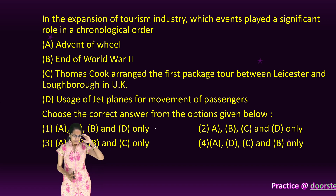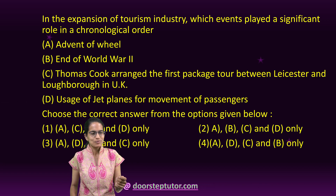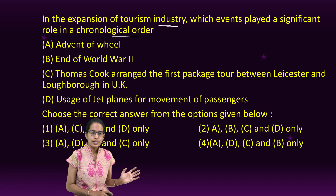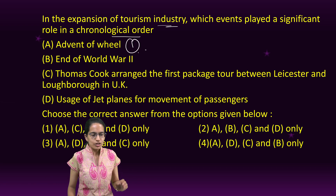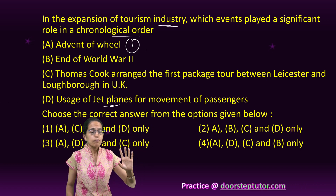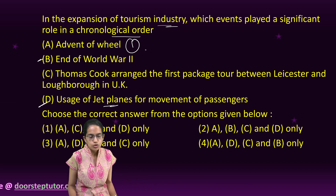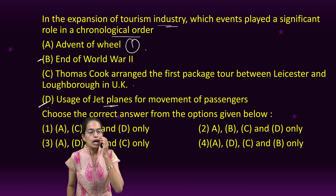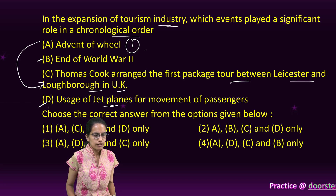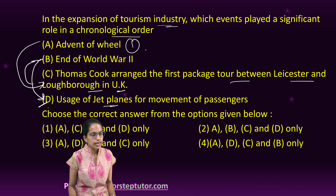The next is a question based more on mental reasoning — the chronological order in which tourism developed. First, the advent of wheels would be the first thing needed for travel. Then, the end of World War II. After that, the usage of jet planes, which came very late — so this is after World War II. Thomas Cook organized the first package tour between Leicester and Loughborough in the UK. So the correct order would be: A (wheels), C (Thomas Cook's tour), B (end of World War II), and D (jet planes).